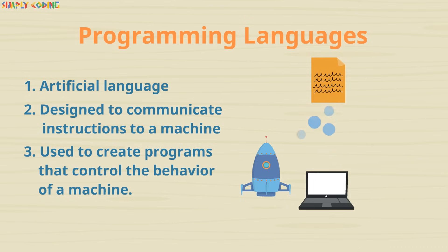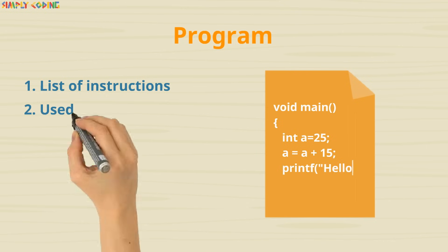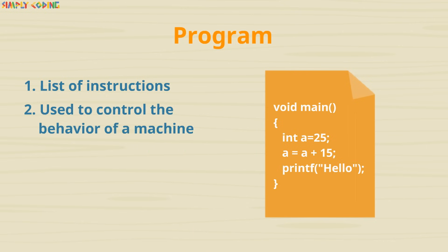It could be a rocket, computer, or even a smart TV. A program is nothing but a list of instructions written in a programming language that is used to control the behavior of a machine.